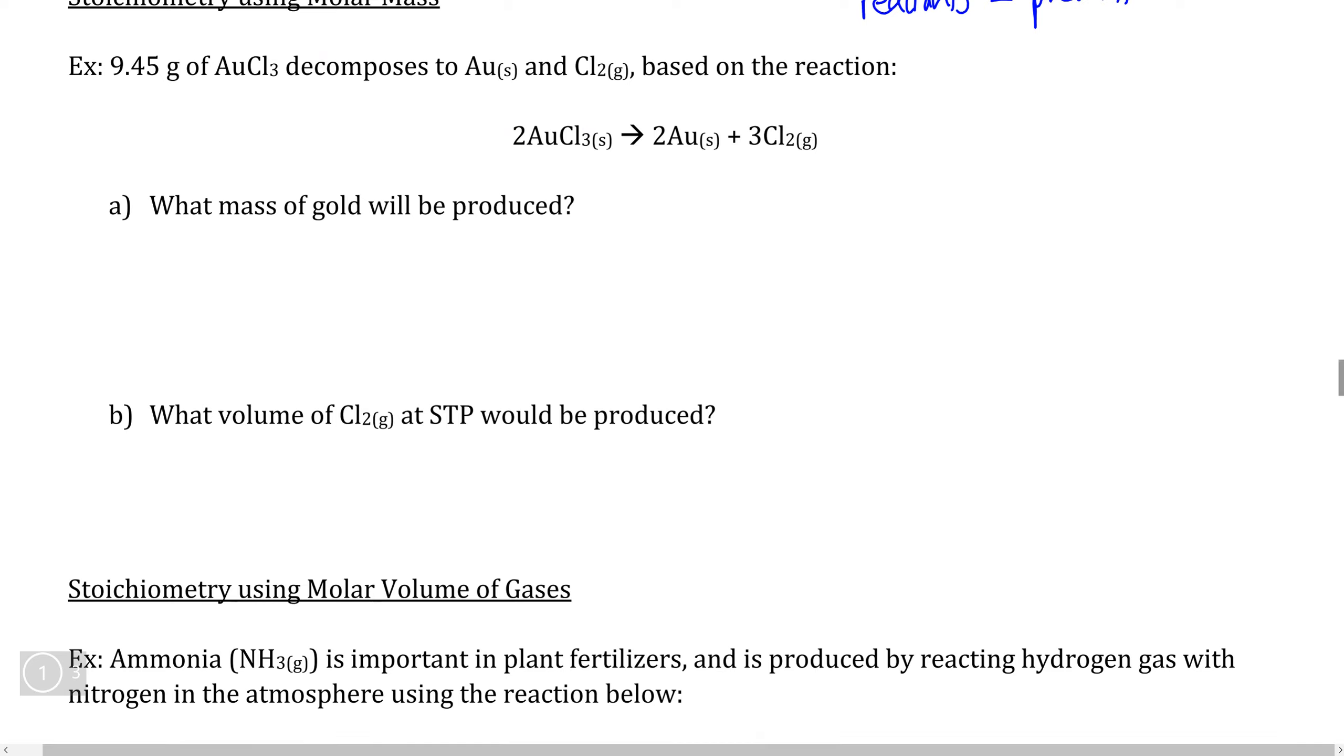If we take a look at this example calculation here, we are told that we start with 9.45 grams of AuCl3, gold 3 chloride, and we want to know, based on this equation here and based on the molar mass of AuCl3, how many grams of gold can we produce from this decomposition reaction?